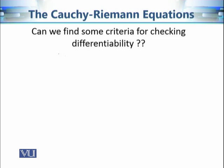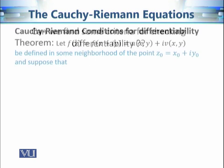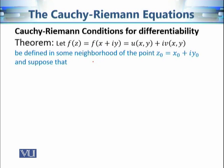The question is: can we find a necessary and sufficient criteria for checking the differentiability of a function? The answer is yes. Here is the theorem: given a function f with components u(x, y) + i·v(x, y), we want to check differentiability at point z₀ = x₀ + i·y₀.